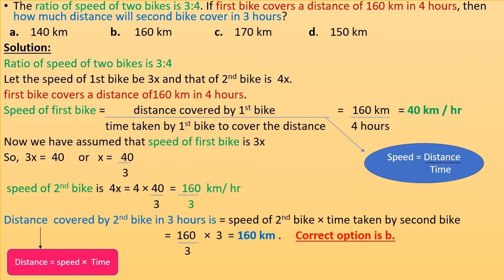We assumed the speed of the first bike is 3x, so 3x = 40, or x = 40/3. Speed of second bike is 4x, so substituting: 4 × (40/3) = 160/3 km per hour. Distance covered by second bike in 3 hours is speed × time: (160/3) × 3 = 160 km. Correct option is B.